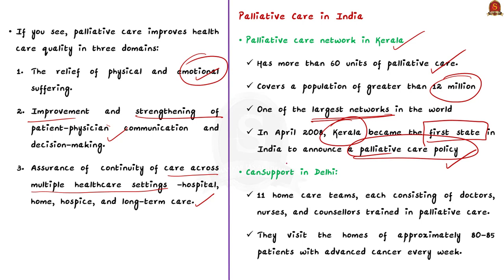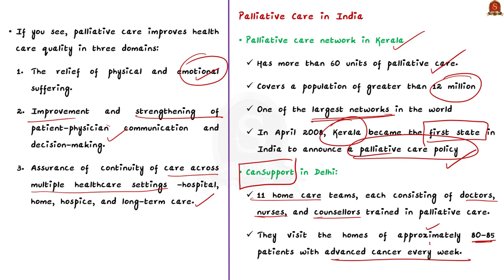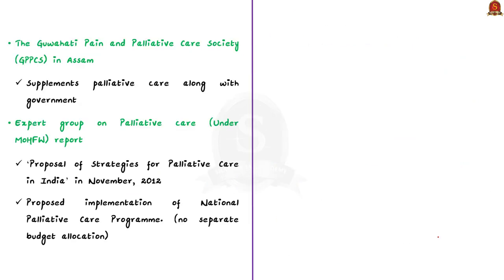Khan Support in Delhi has love and home care teams, each consisting of doctors, nurses, and counselors trained in palliative care. This network covers different parts of Delhi and the national capital region, visiting homes of approximately 80 to 85 patients with advanced cancer every week. There is also a palliative care network in Assam, Northeast India, called the Guwahati Pain Palliative Care Society, GPPCS.